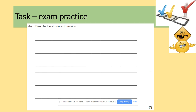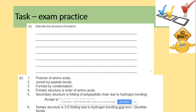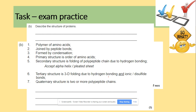To describe the structure of proteins, recall all the levels: proteins are polymers of amino acids joined by peptide bonds formed by condensation reaction. Primary structure is the order of amino acids. Secondary structure is the folding due to many hydrogen bonds. Tertiary structure involves hydrogen bonds, ionic bonds, and disulfide bonds. Quaternary structure requires more than one polypeptide chain.